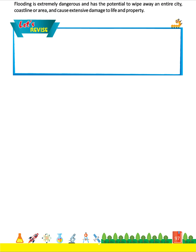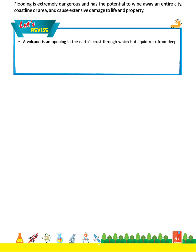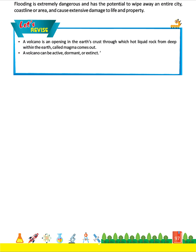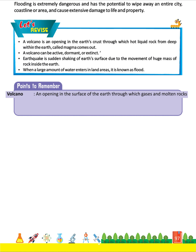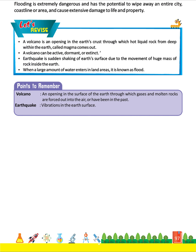Let's revise. A volcano is an opening in the earth's crust through which hot liquid rock from deep within the earth, called magma, comes out. A volcano can be active, dormant, or extinct. An earthquake is the shaking of the earth's surface due to the movement of huge masses of rock inside the earth. When a large amount of water enters land areas, it is known as a flood. Key definitions — Volcano: an opening in the surface of the earth through which gases and molten rocks are forced out. Earthquake: vibrations in the earth's surface. Flood: excess water flowing in land areas.